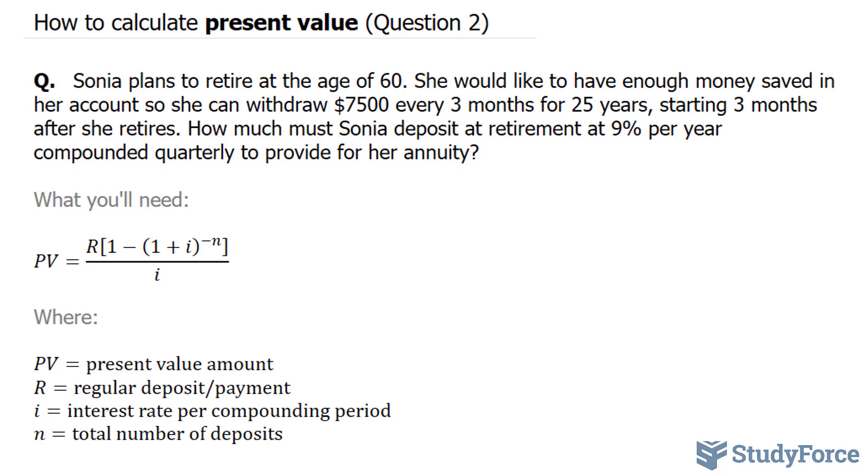We know that the withdrawals, which is represented by R, is equal to $7,500. We are also told that she'll be doing this for the next 25 years and she'll be doing it every 3 months.